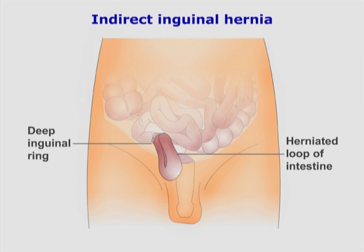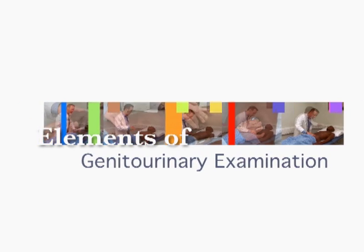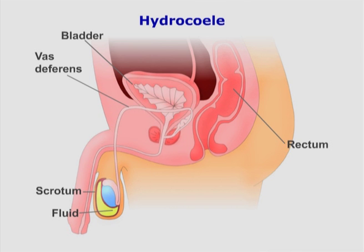An indirect inguinal hernia travels from the internal inguinal ring through the inguinal canal. A hydrocele is the accumulation of fluid in the tunica vaginalis, which surrounds the testis and makes palpation of the testis less definable.